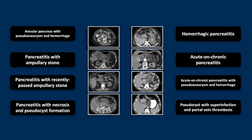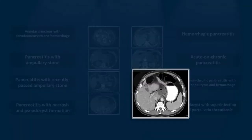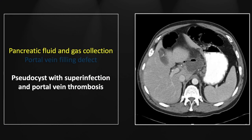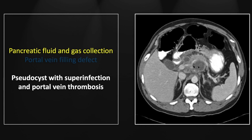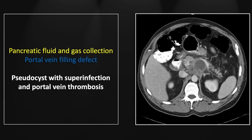Our last case is a pancreatic pseudocyst with superinfection and septic portal vein thrombosis. This pseudocyst sat just superior to the pancreas at the junction of the head and body, was fairly well circumscribed, but you can see that focus of gas within it telling the whole story — a superimposed infection is certainly a consideration. There is more than just that focus of gas, though. You can see in a lower fluid collection a similar phenomenon. Going a little more inferiorly, you can see the splenic vein coming across in front of that fluid collection, containing a focal filling defect, which in this setting has to be described as potential septic thrombophlebitis of the portal venous system.